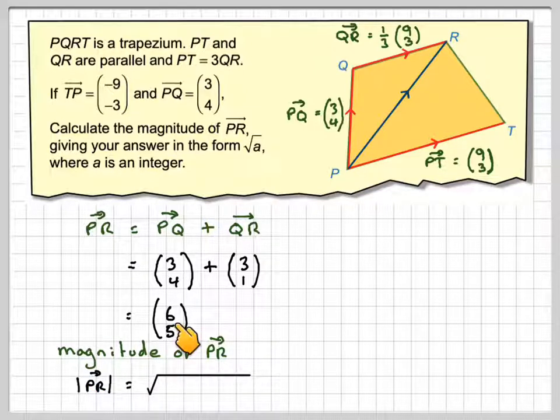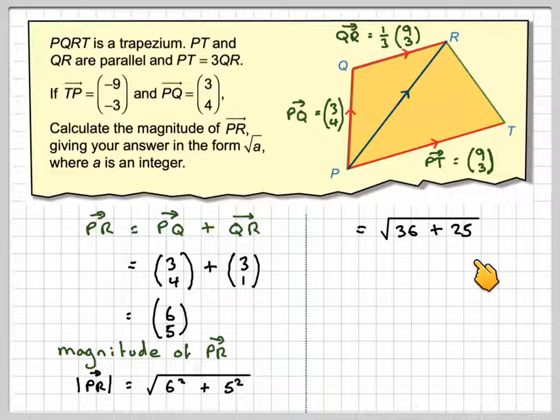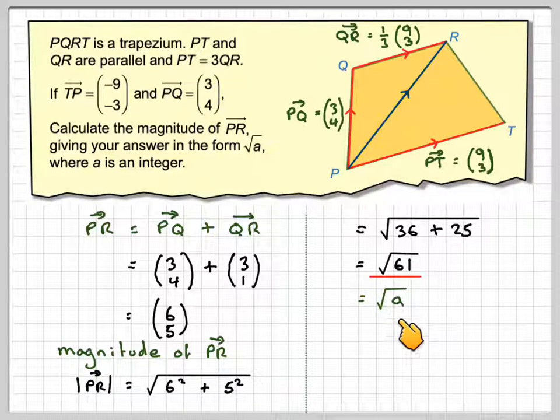So that's going to be 6 squared plus 5 squared, so it's going to be the square root of 36 plus 25, which gives me the square root of 61, which is in the form of root a where a is an integer.